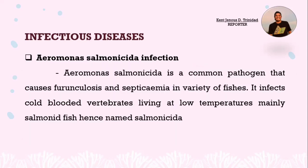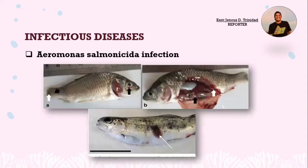The next example is Aeromonas salmonicida infection. It is a common pathogen that causes furunculosis and septicemia in a variety of fishes. It infects cold-blooded vertebrates living at low temperatures, mainly salmonid fish, hence named Salmonicida. As you can see in the picture, the fish shows tail rot and dark spots on the body, as well as enlarged spleen and focal necrosis of the liver.